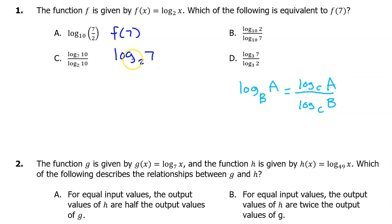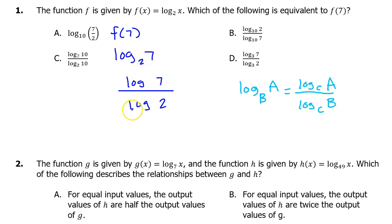Applying the change of base formula to log base 2 of 7, we can rewrite this as log of 7 divided by log of 2. The base 2 is low, which reminds me that log of 2 will end up in the denominator. Looking at the answer choices, just look for the answer that has log 7 in the numerator and log 2 in the denominator — it doesn't matter what base you see. So I see log base 3 of 7 over log base 3 of 2. That works. The answer is D.